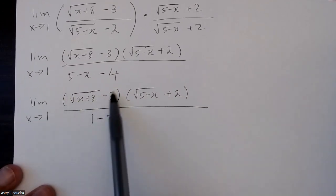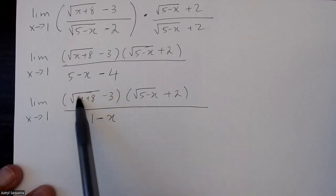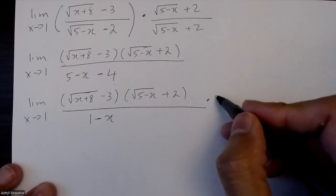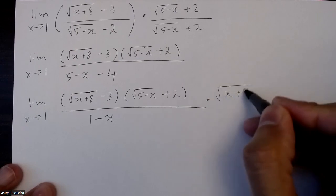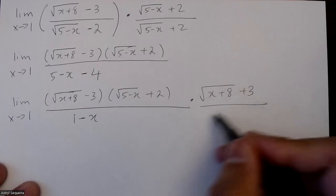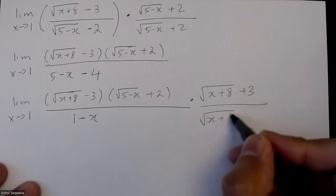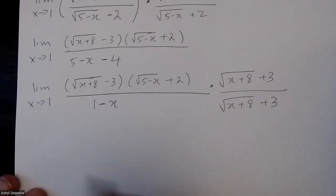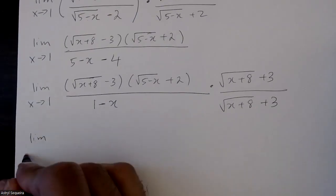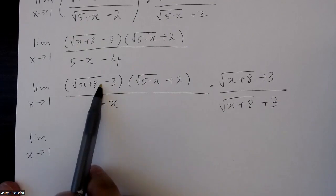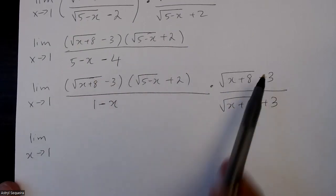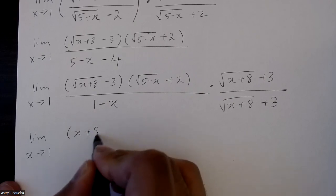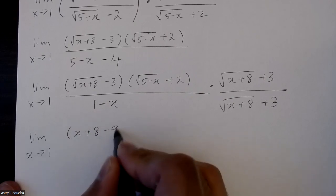Now, the next thing I want to do is rationalize this term on the top. I'm going to multiply the top and bottom by root of x plus 8 plus 3. So again, I'm going to foil out these two brackets, but middle terms don't matter because it's a difference of squares. That's just going to be x plus 8 minus 9.